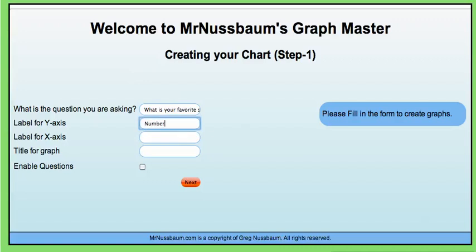The Y axis would be the number and the X axis would be the subject. The title of my graph would be, let's say, school subjects. Then I want to click enable questions.